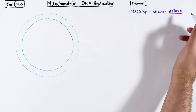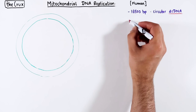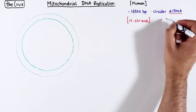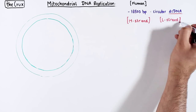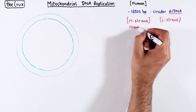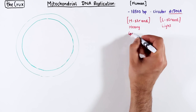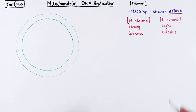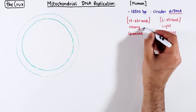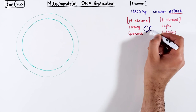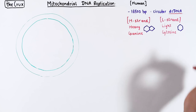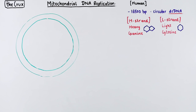Interestingly, one of the two strands happened to be heavier than the other, so we call them the H and L strands. The heavier one has a lot of guanines, and the lighter one has a lot of cytosines. Guanines are double-ringed versus cytosines are single-ringed, and that explains the heavy versus the light difference.